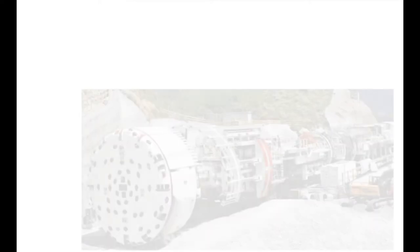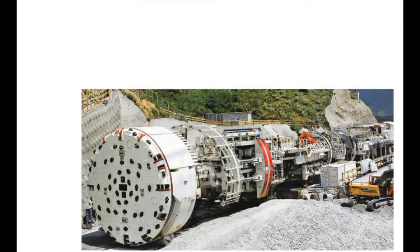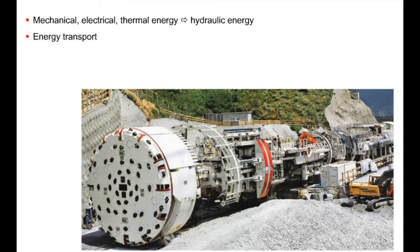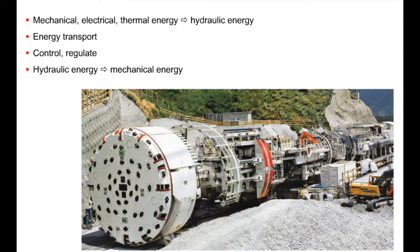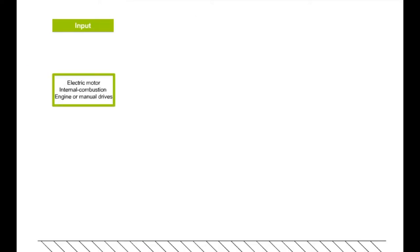In a hydraulic system, energy is converted. First, mechanical, electrical, or thermal energy is converted into hydraulic energy. The energy is then transported in this form, controlled and regulated as required, and finally converted into mechanical energy. The picture shows a tunnel boring machine, where a hydraulic system provides the enormous amount of energy required by the drill bit. By illustrating the energy conversion process in a diagram, you can recognize the basic functional groups in a hydraulic system.